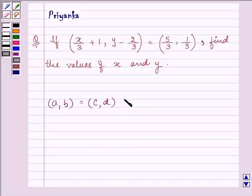then we can say that a is equal to c and b is equal to d. This is equality of two ordered pairs.